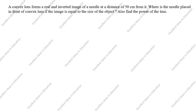Hi students, welcome to my channel, Excellent Ideas in Education. Today we are going to solve this light chapter problem. A convex lens forms a real and inverted image of a needle at a distance of 50 centimeters from it. Where is the needle placed in front of the convex lens if the image is equal to the size of the object? Also find the power of the lens.